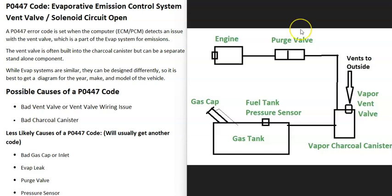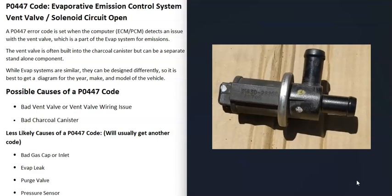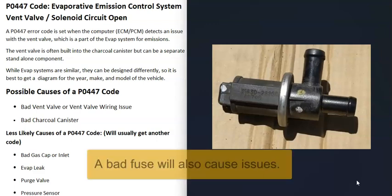When you get this P0447 code, the computer is seeing a problem with the vent valve, and it's going to need to be troubleshot. The main things that cause this code are either the vent valve has gone bad and needs to be replaced, or there is some kind of issue with the wiring going to the vent valve — like an open or short circuit.